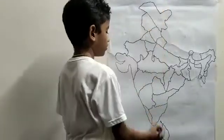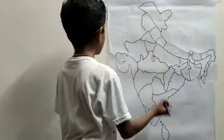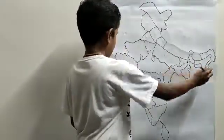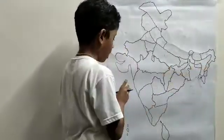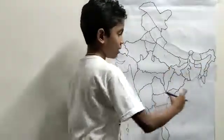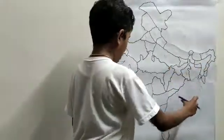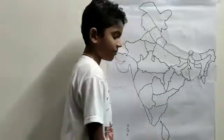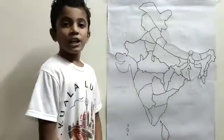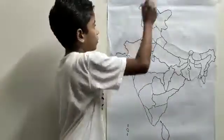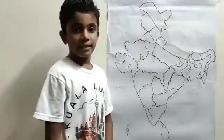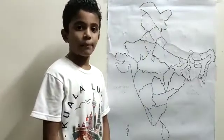This is North, South, West and East. This is Arabian Sea, Bay of Bengal and Indian Ocean. In the North-West, Afghanistan and Pakistan are sharing borders.